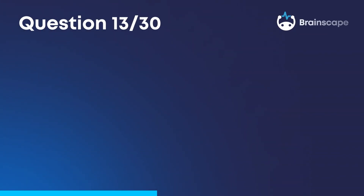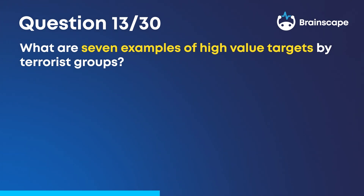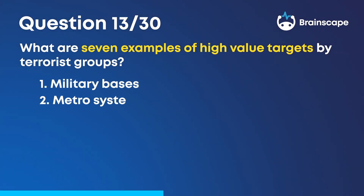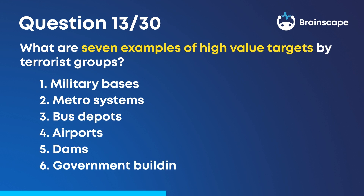Question 13. What are seven examples of high-value targets by terrorist groups? Military bases, metro systems, bus depots, airports, dams, government buildings, and hospitals.